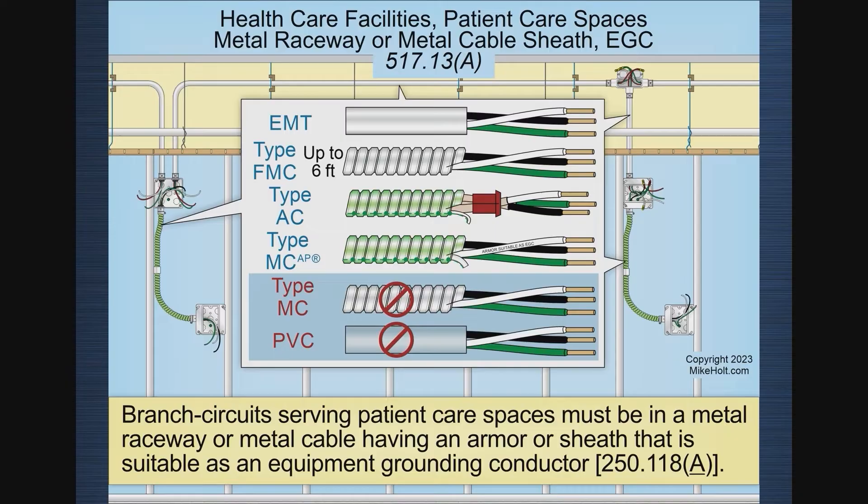What the code requires is the feeder or branch circuits to the patient care areas, and the wiring in the patient care area, must have an equipment grounding conductor or an effective ground fault current path — I'll call it mechanical. That would be like EMT, the armor of MC cable, or the armor of AC cable. That's Section A — mechanical.